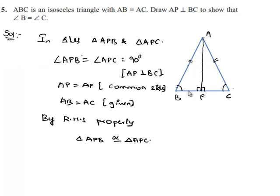When two triangles are congruent, their corresponding sides and corresponding angles are equal. Therefore, we can equate angle B equal to angle C, which is our required proof.